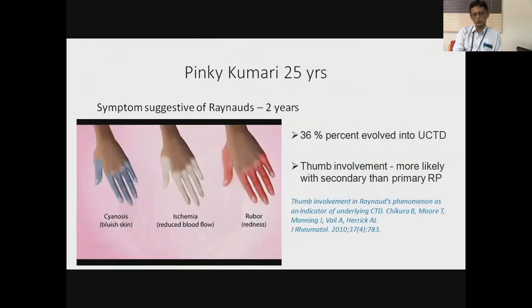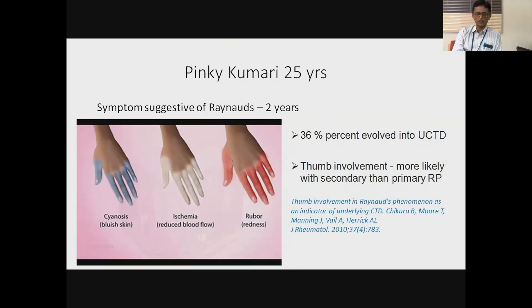I'll go through a few patients we typically see in our OPD. This is about Pinky Kumari, who was 25, and she had symptoms suggestive of triphasic Raynaud's with typical cyanosis, ischemia or reduced blood flow, and redness or rubor. She did not have any other manifestations of systemic autoimmune rheumatic disease.